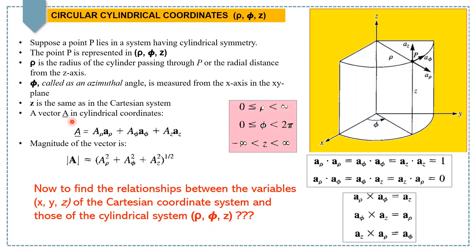We can write vector A in cylindrical coordinates as A equals A-rho times a-rho plus A-phi times a-phi plus A-z times az. We can also take the magnitude by taking the square root of the square of the first term plus the square of the second plus the square of the third. Note that rho ranges from 0 to infinity, phi ranges from 0 to 2π, and z ranges from minus infinity to plus infinity.